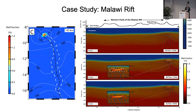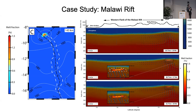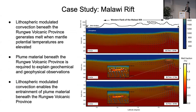We applied this to the Malawi Rift. The white dashed lines outline the Malawi Rift, and in the northern part — very close to the Rungwe volcanic province — we found melt generation. Profile figures through the region at different time steps, with insets, highlight where we found melt generation near the Rungwe volcanic province.